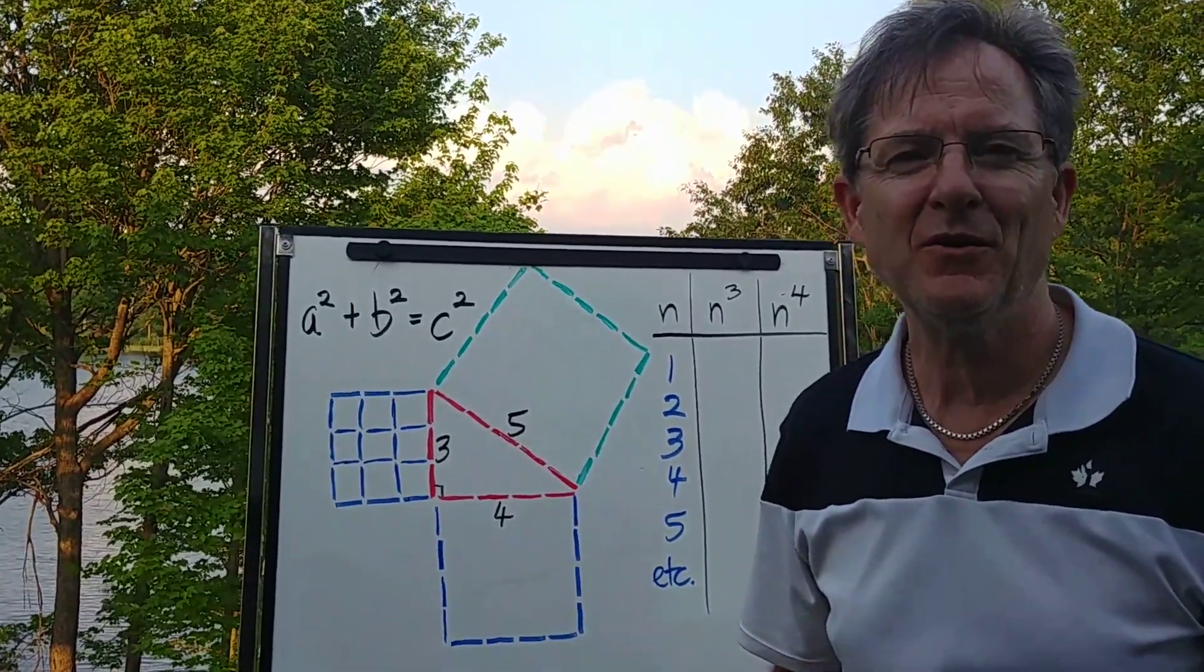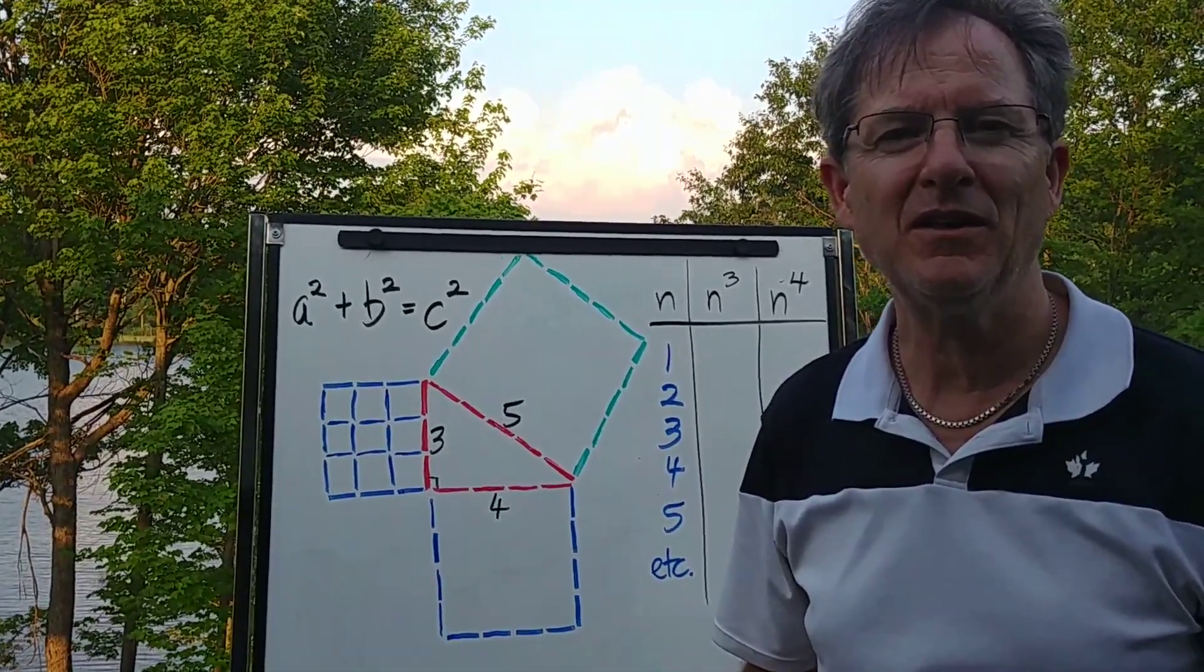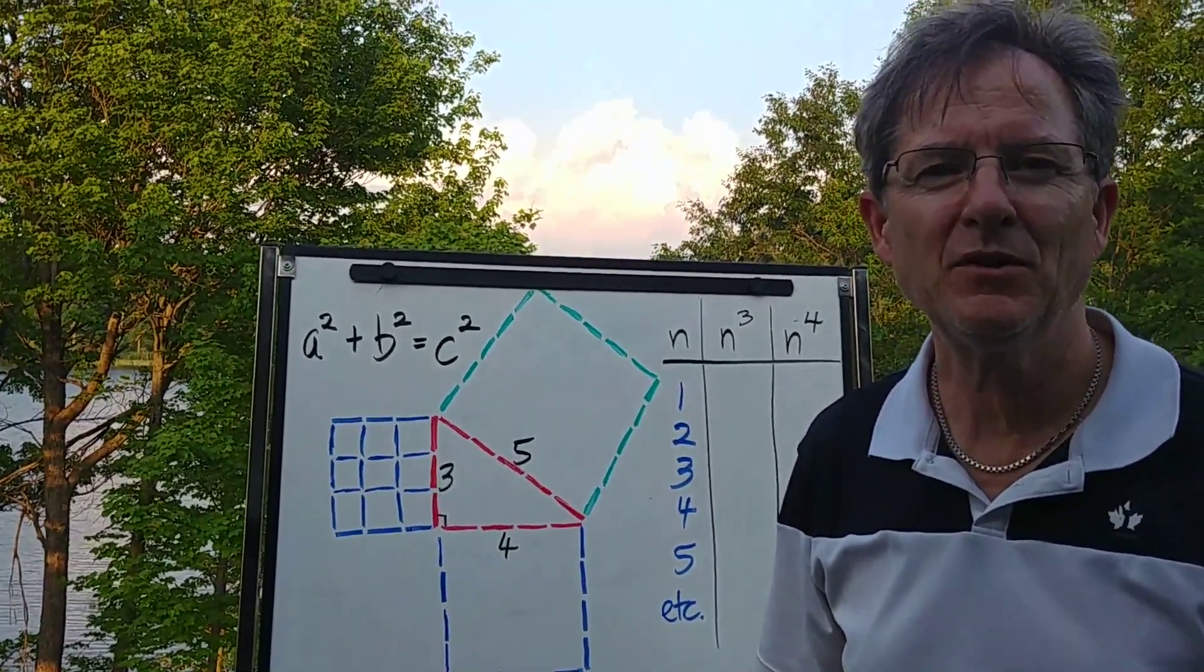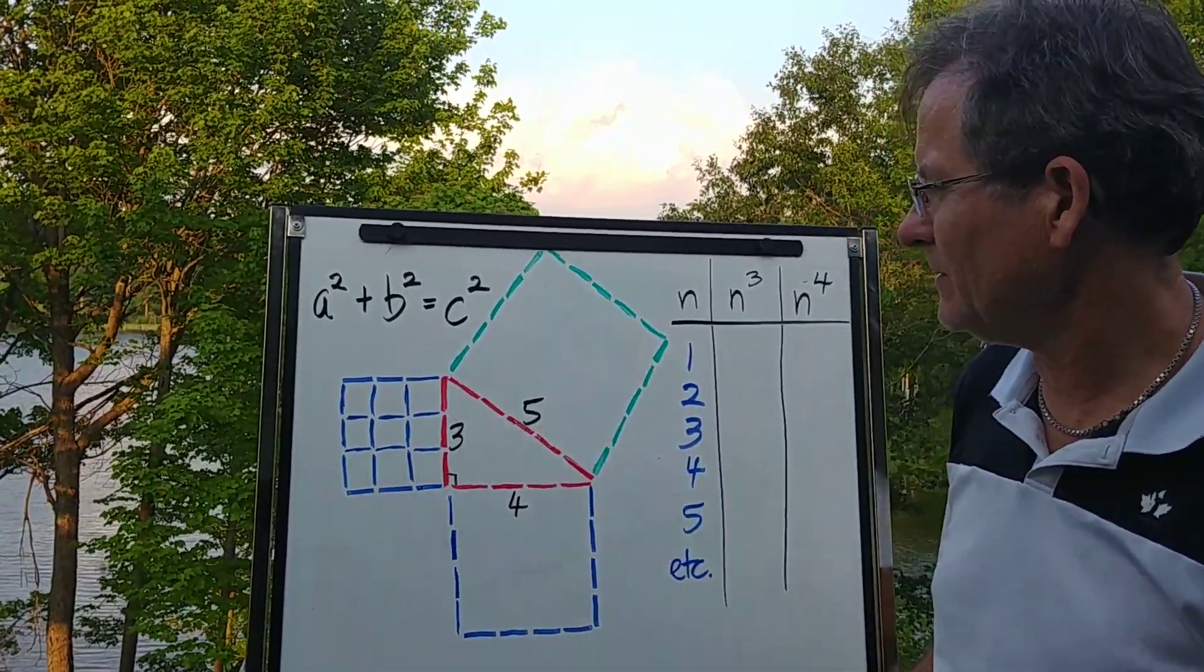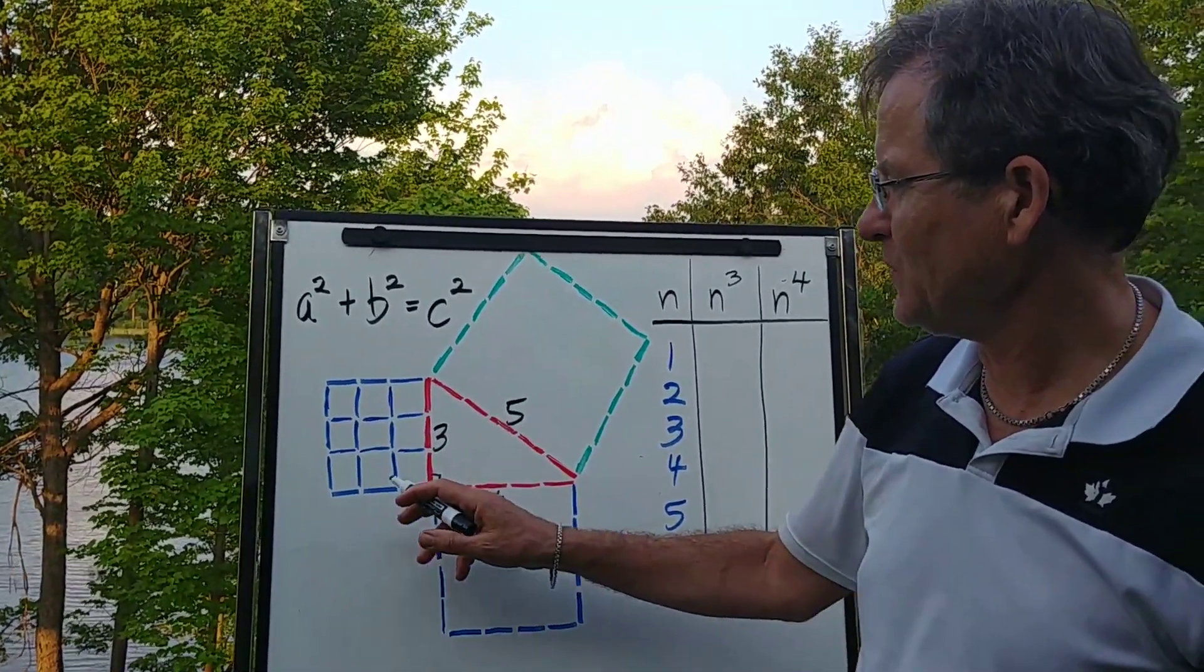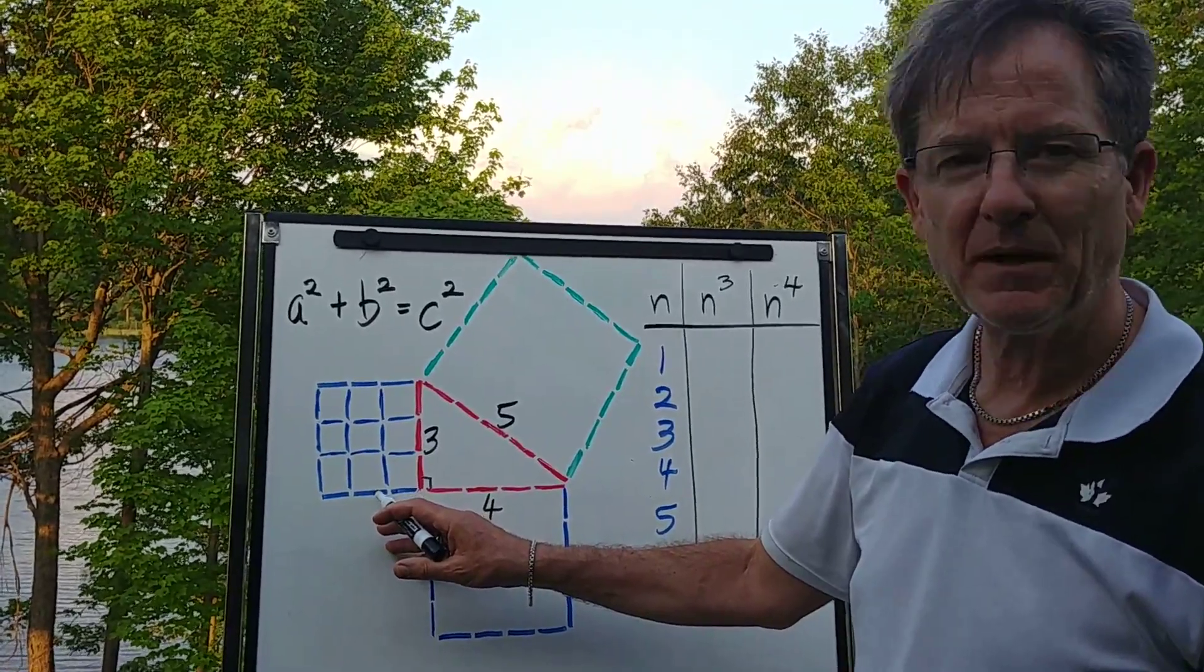Now, I was teaching a grade 4 student about the Pythagorean Theorem, so we did it with toothpicks. We made a 3, 4, 5 right angle triangle, and then on the sides we built squares with toothpicks like this.